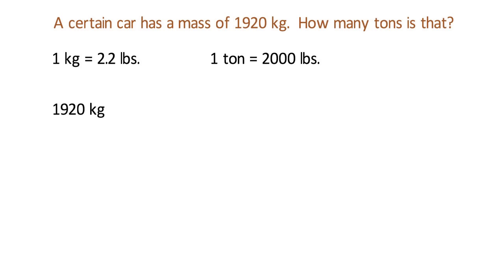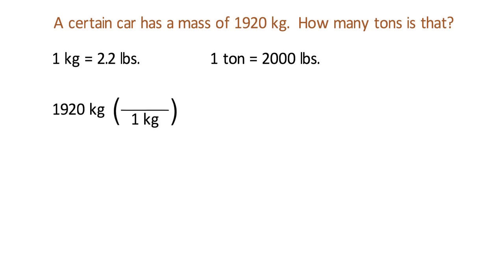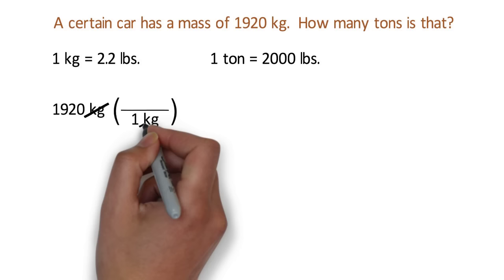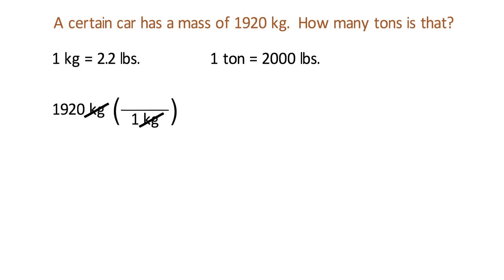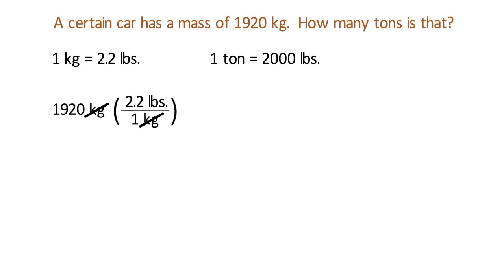And then we multiply this by a fraction. The two numbers that go in the fraction come from one of the conversion factors. But what goes on the bottom? Because we are starting with kilograms, we write one kilogram on the bottom of the fraction so that we can cancel out the kilograms. Next, the other half of that same conversion factor, 2.2 pounds, has to go on the top. The kilograms cancel out, leaving us with pounds as the units of our answer.